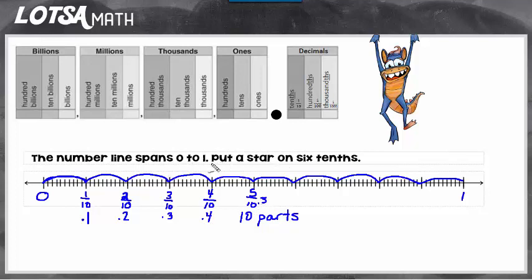Okay, so for this question, it said put a star on 6 tenths. So I need to keep going until I get to 6 tenths. So when I find 6 tenths, I'm going to put a star there.